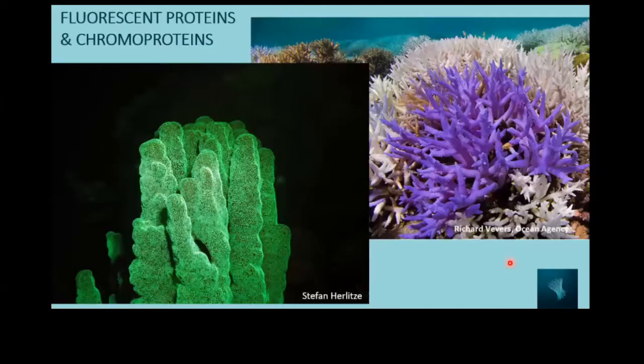But what happens if we see corals that are really colorful? Normally the pigments giving corals their brown or green color are actually the symbiont pigments. But when corals are bleached, the color is lost because the symbionts are gone. So when the symbionts are gone, what gives them colors?